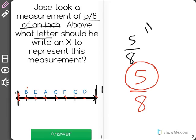1, there's 1, 2, 3, 4, 5. F is at 5 eighths.